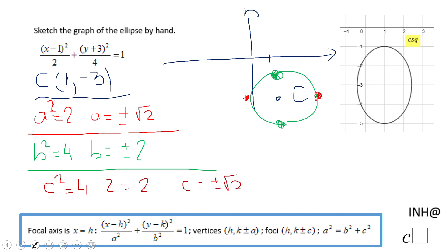So c is going to be plus or minus square root of 2. So from this center here you're going to have to move down square root of 2, up square root of 2, and these are the foci, in case you need them.